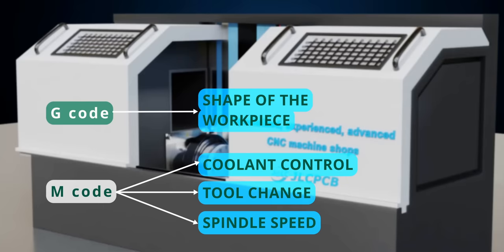This means all the machine-related information such as coolant control, tool change, and spindle speed are controlled by M-code. Now, comes the next machining challenge.